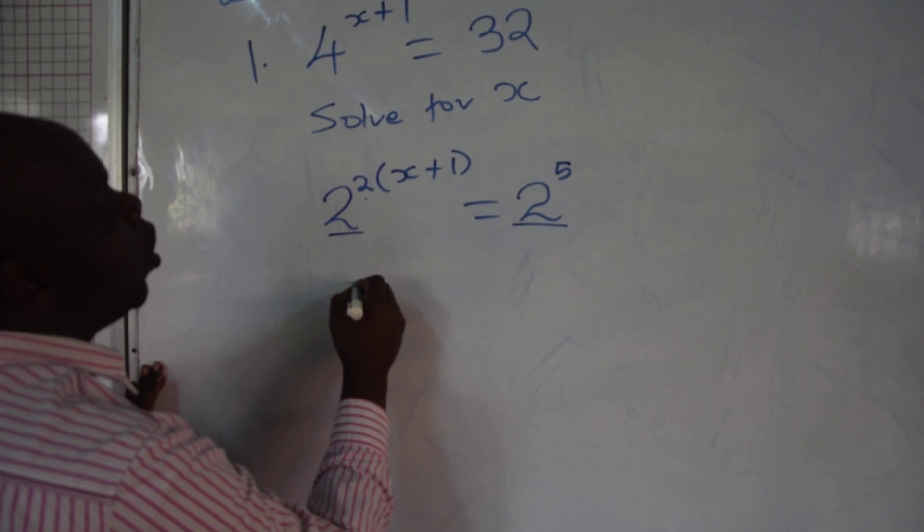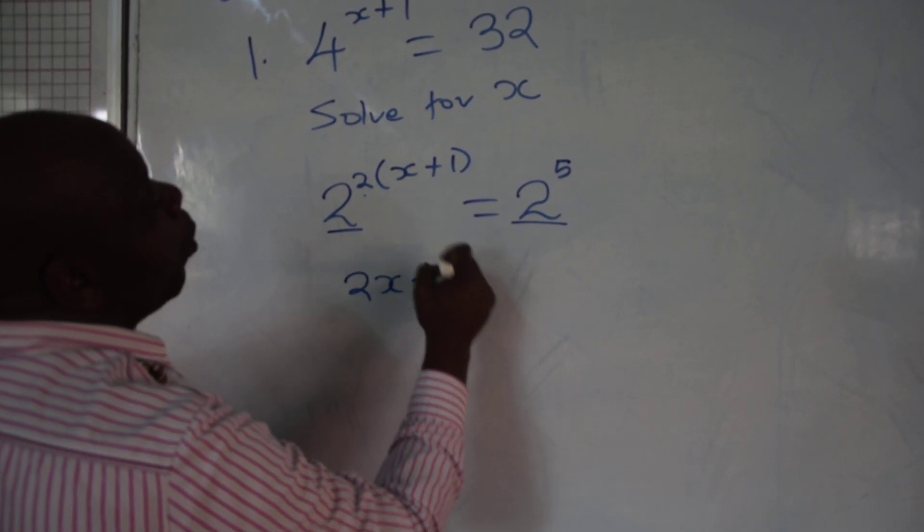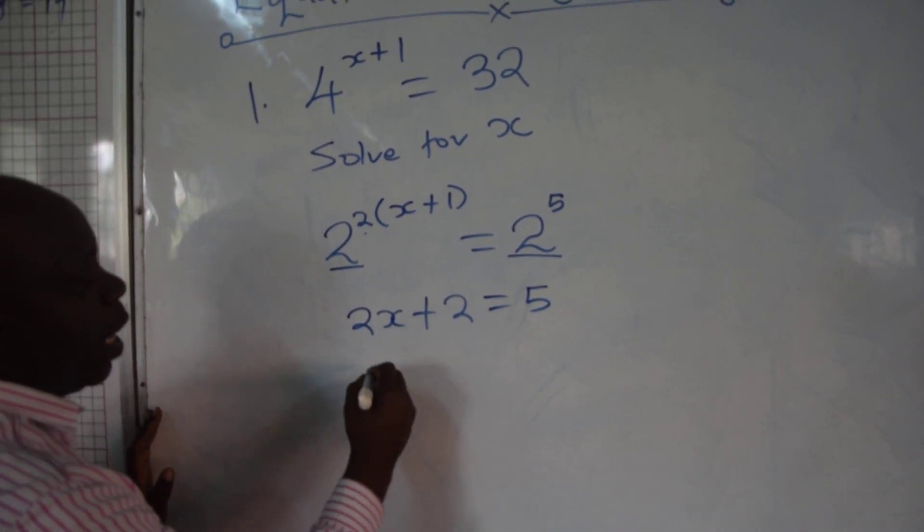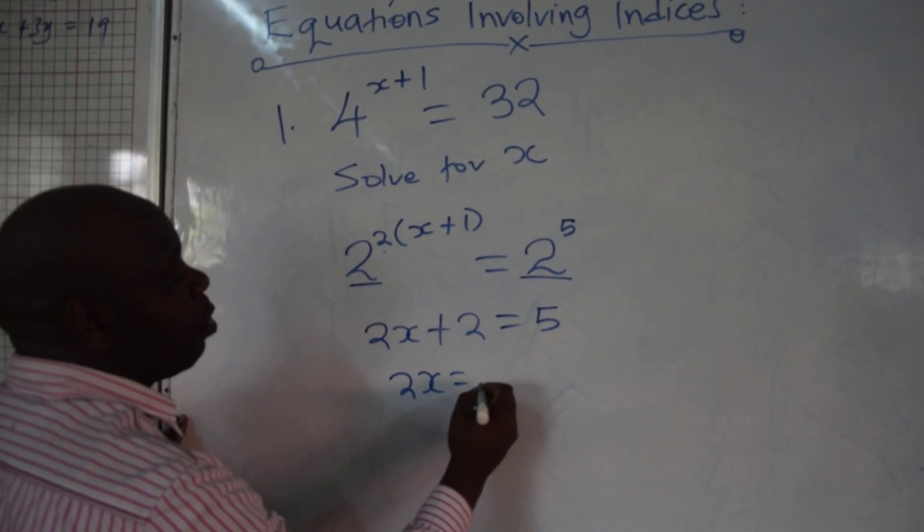And therefore, 2x plus 2, if you open up the brackets, is equal to 5. And from there, 2x equals to 3.